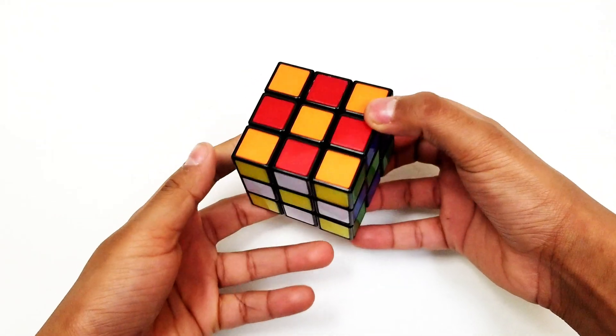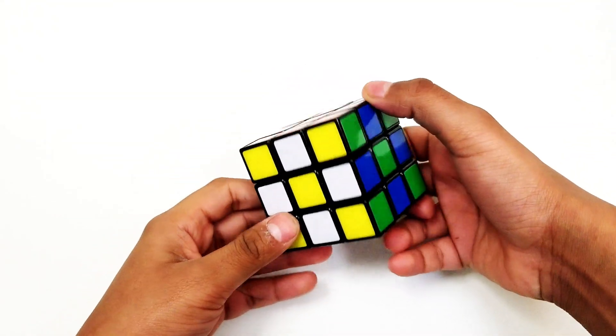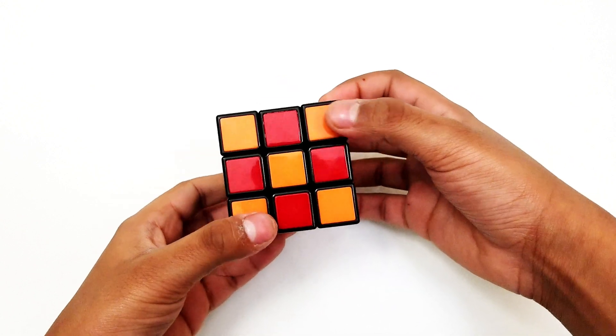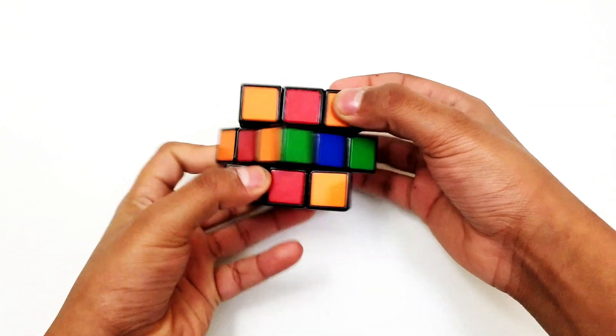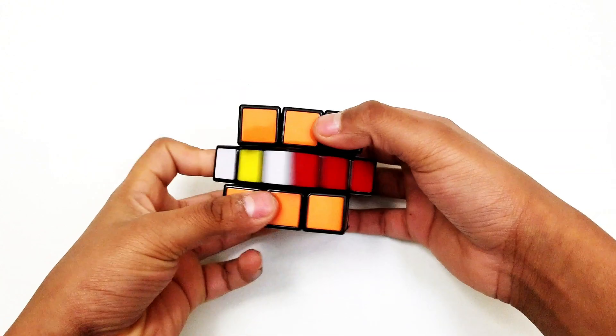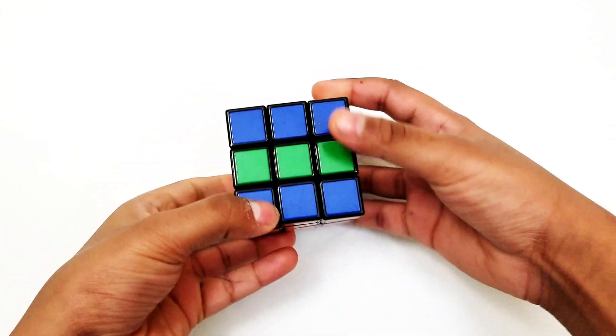As you can see, you will have a cube in its checkerboard form. To get the cube back to its normal state, turn the middle twice, then turn it and turn the middle twice, and then turn it down and turn the middle twice again.